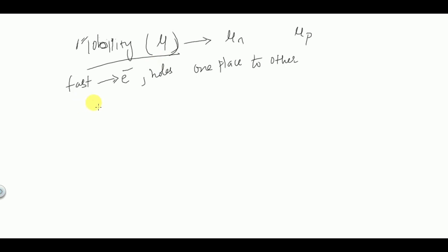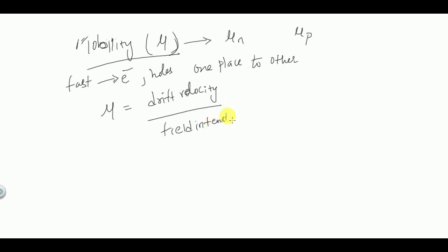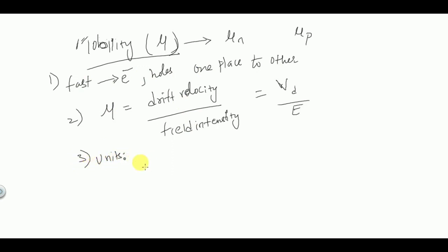Mobility is defined as drift velocity divided by field intensity: μ = vd/E. The units of mobility are m²/V·s or cm²/V·s. Mobility always represents how fast electrons and holes are moving from one place to another.